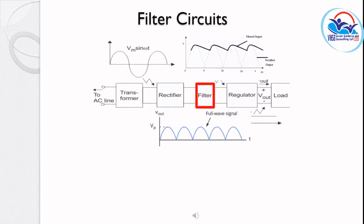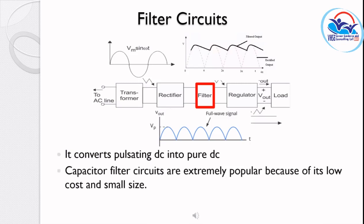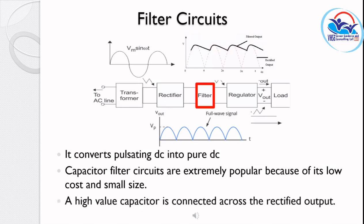The next section of the DC power supply is the filter circuit. It converts pulsating DC into pure DC. A high-value capacitor is connected across the rectified output to achieve this filtering.